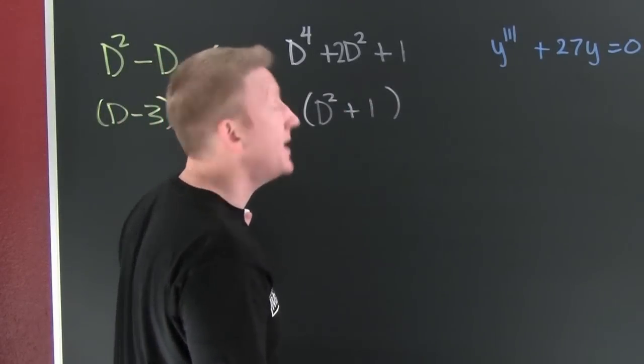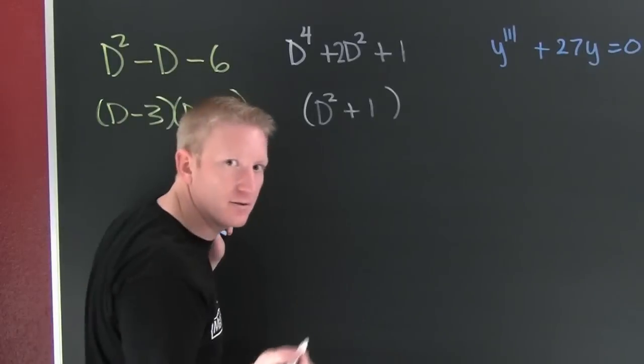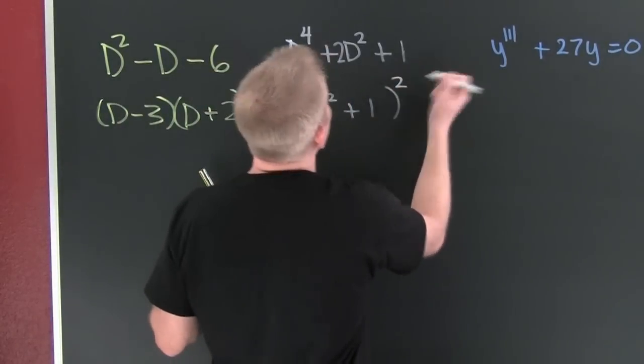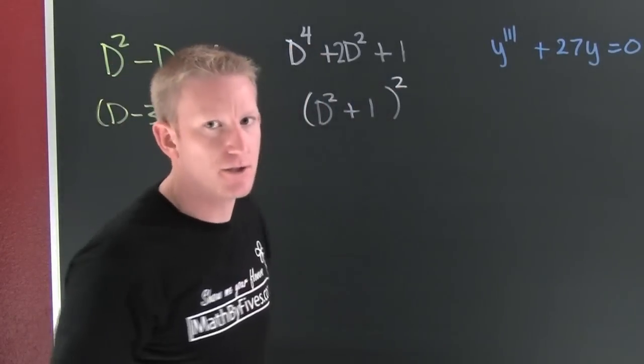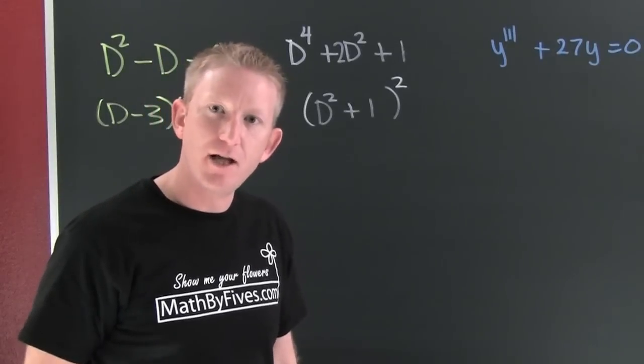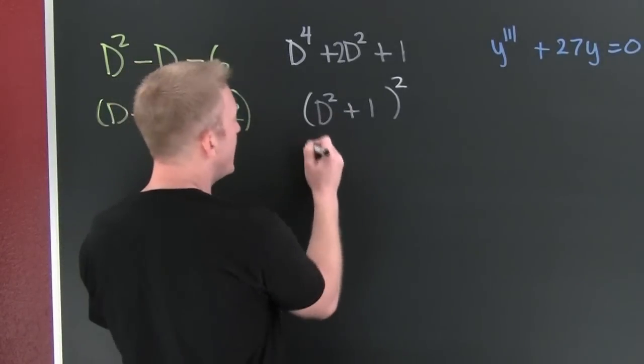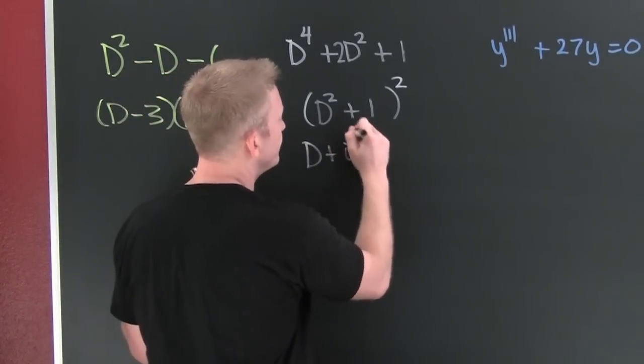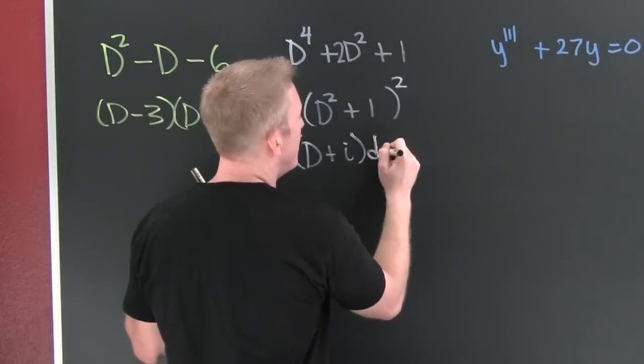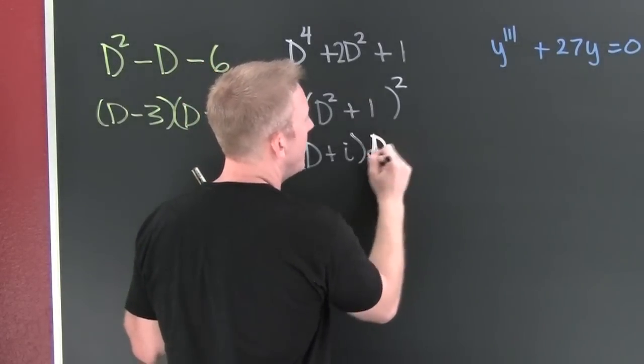Check out those factoring videos. It's not going to be squared right there and then you can't go into linear factors because that's imaginary. This would be D plus I, D minus I.